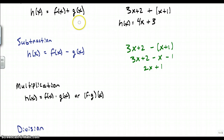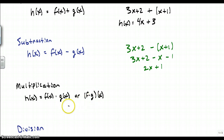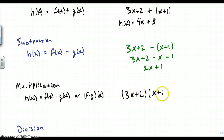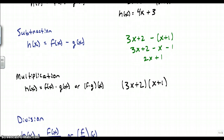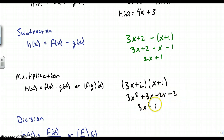Next I'm going to show multiplication. There are two different ways you can see this: f of x times g of x, or f times g of x — both mean the same thing. So my f of x is 3x plus 2, and I'm multiplying that times g of x, which is x plus 1. I'll FOIL: first gives 3x squared, outside gives 3x, inside gives 2x, last gives 2. So my final answer is 3x squared plus 5x plus 2. That is f of x times g of x.